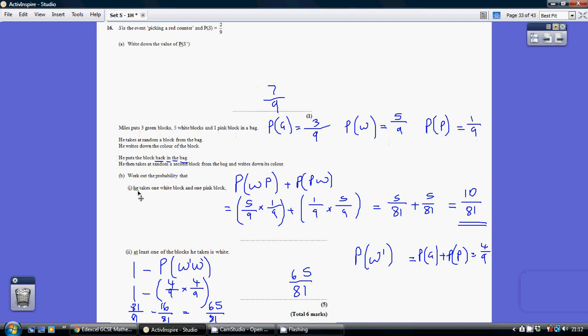We're being asked to work out the probability that he takes one white block and one pink block. So two ways of ending up with one white and one pink. You could first of all get a white and then a pink, or alternatively you could get a pink and then a white. Let's look at the white and then a pink first. Probability of a white is 5 out of 9, and it's and then a pink. So for an and you multiply. So you multiply by the probability of a pink with your second pick. That's 1 out of 9. As I said earlier, it's not 1 out of 8 because we put the initial block back. So the probability of white and then a pink is 5 ninths times 1 ninth. Top times top, bottom times bottom. That's 5 over 81.